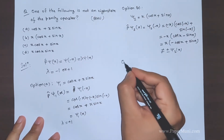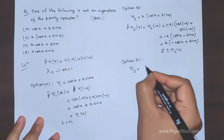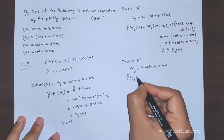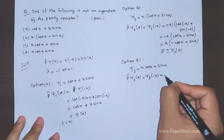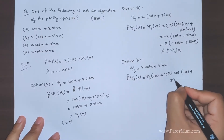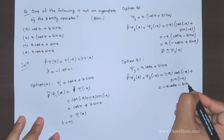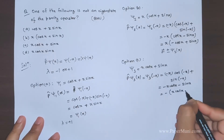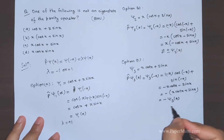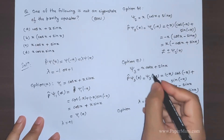That means this cannot represent an eigenstate of the parity operator. For option C, ψ₃ = x·cos(x) + sin(x) — operating the parity gives ψ₃(-x) = (-x)·cos(-x) + sin(-x) = -x·cos(x) - sin(x) = -(x·cos(x) + sin(x)) = -ψ₃. So λ = -1, and this is also an eigenfunction of the parity operator.